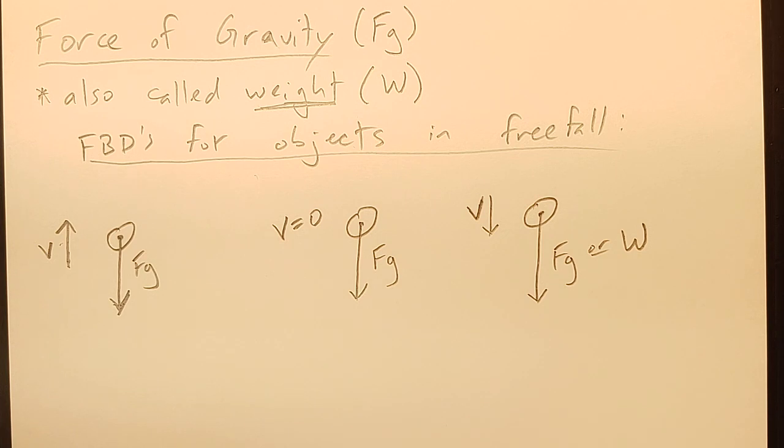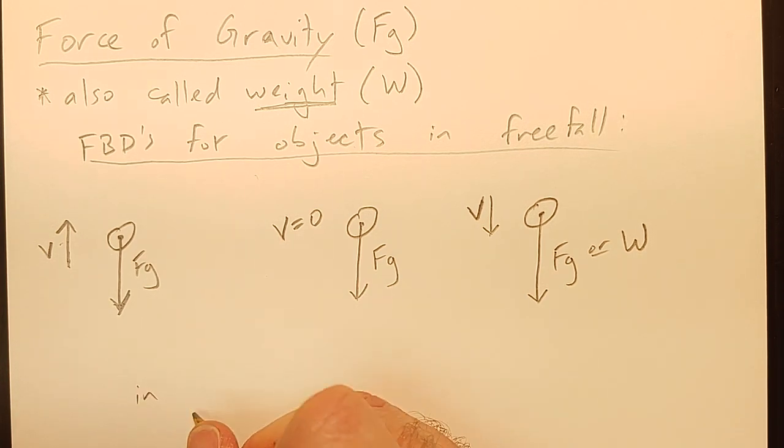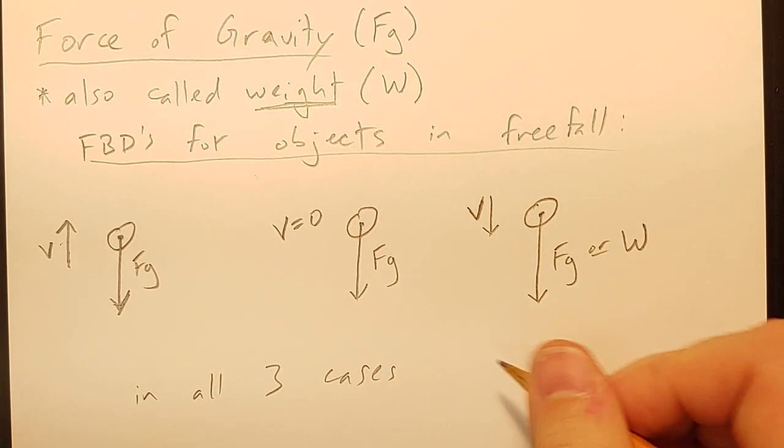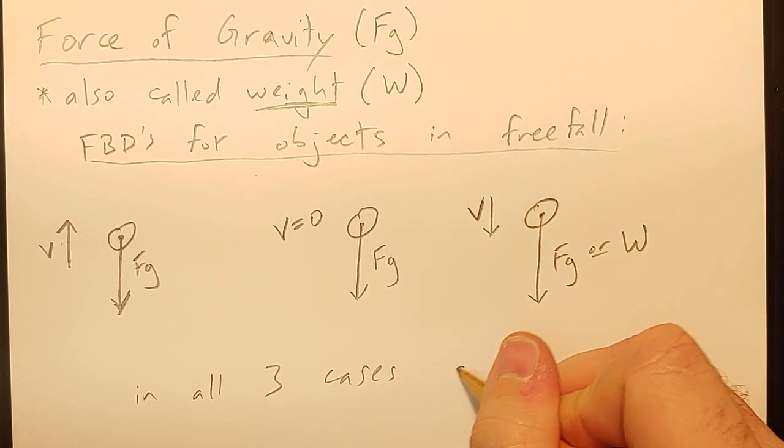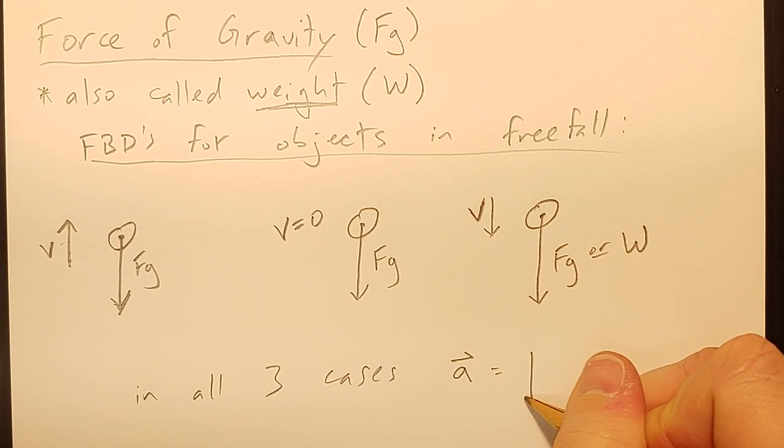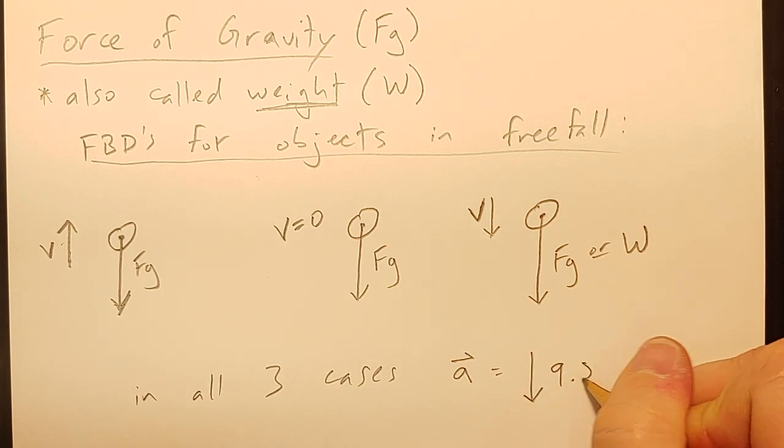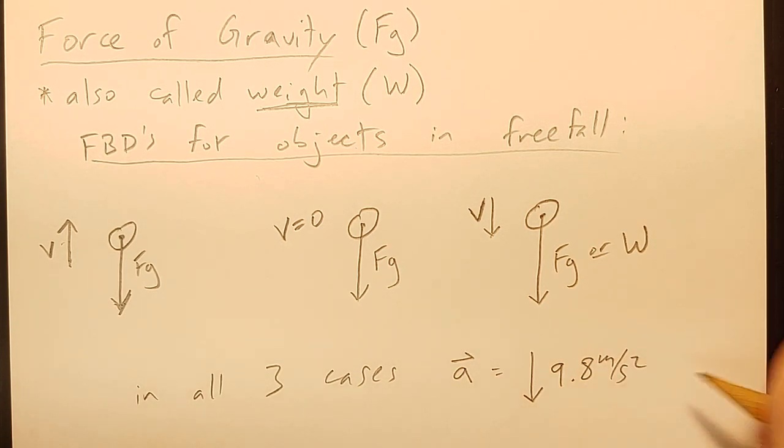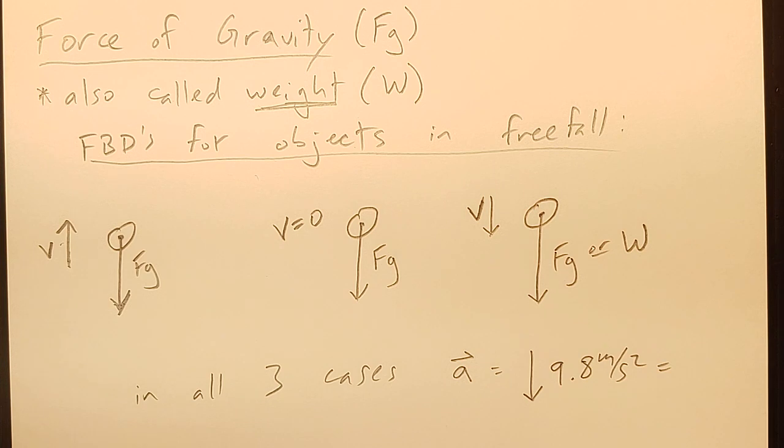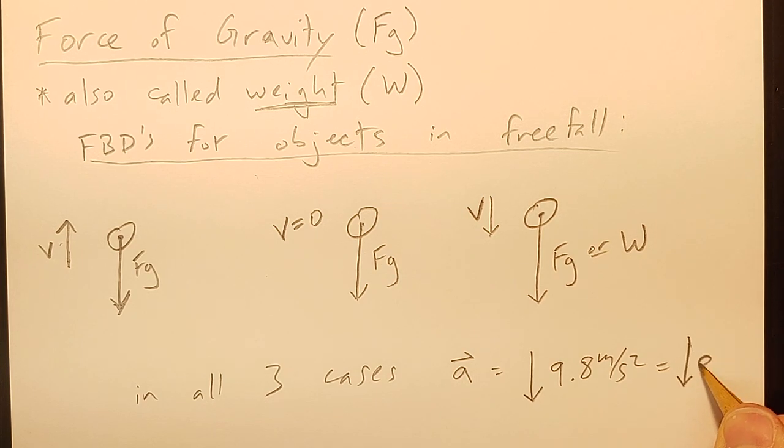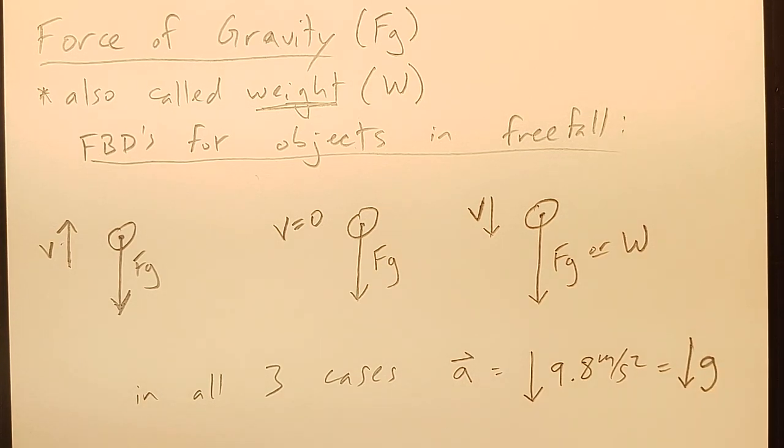And so every single one of these has to be what's going on. And we know in all three cases, we know that the acceleration has to be downwards or negative 9.8 meters per second squared. And that magnitude, 9.8 meters per second squared, we call G. And so we could say the acceleration has to be downwards at G.